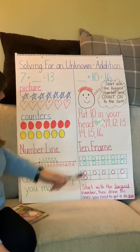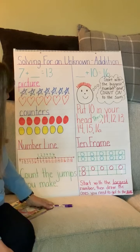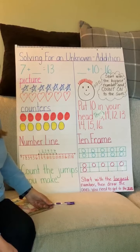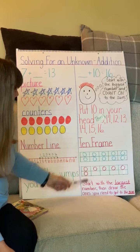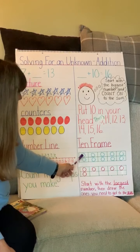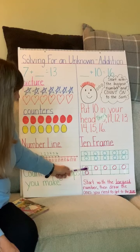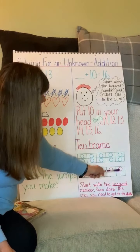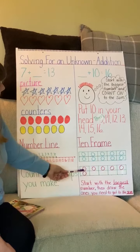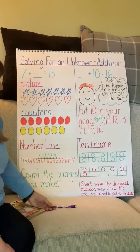The last way we'll talk about today is with a ten frame. I drew two ten frames. I started with the 10 we know in the first frame. To find the missing addend, we fill in the other ten frame until we reach our sum. Starting with 10, we draw: 11, 12, 13, 14, 15, 16. Just by looking at that ten frame — which we've subitized all year — we know there are six items, so our answer is 6.